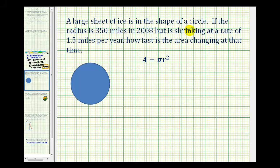A large sheet of ice is in the shape of a circle. If the radius is 350 miles in 2008, but is shrinking at a rate of 1.5 miles per year, how fast is the area changing at that time?